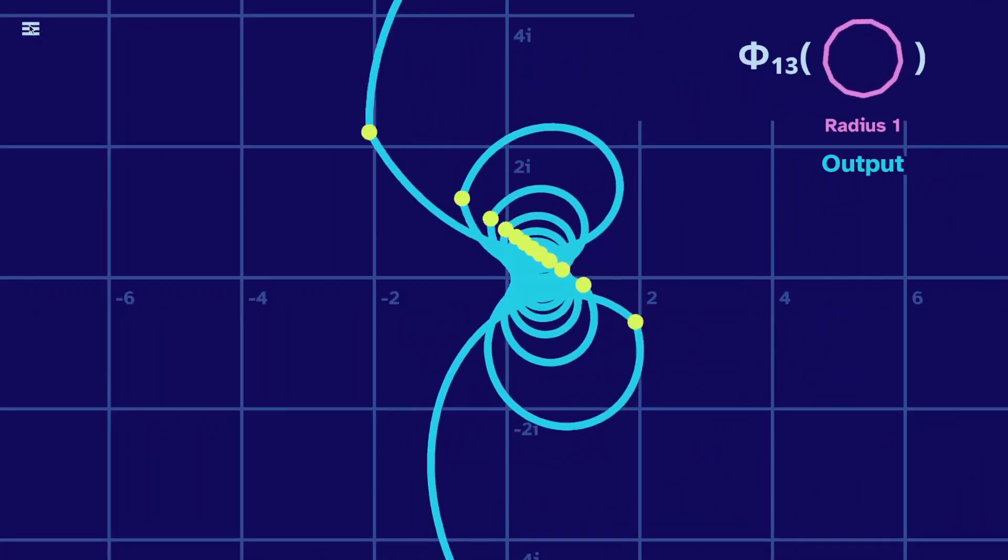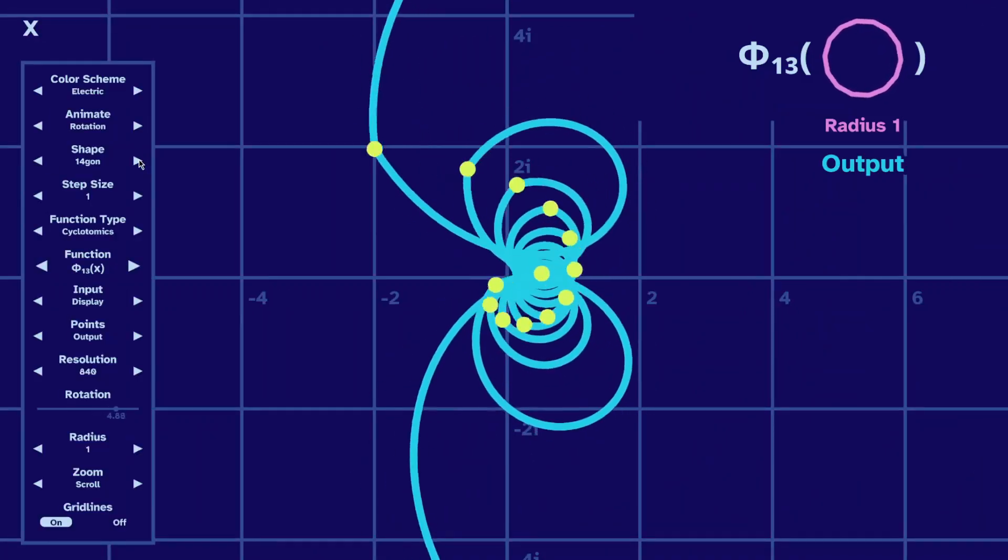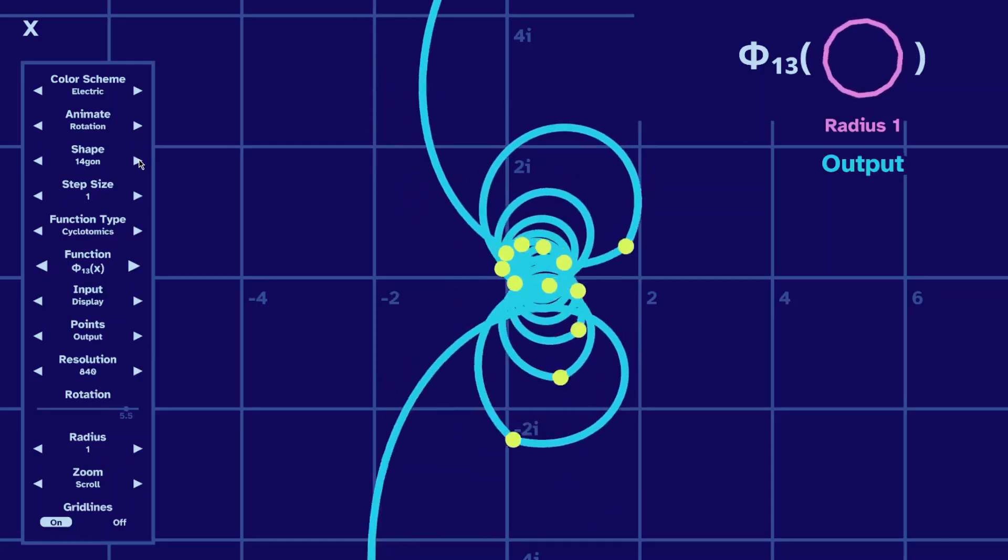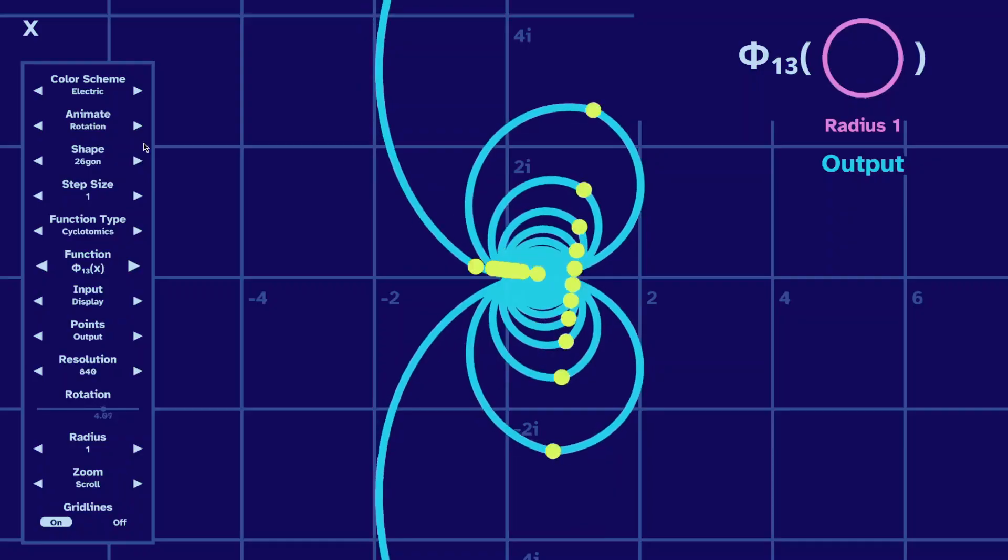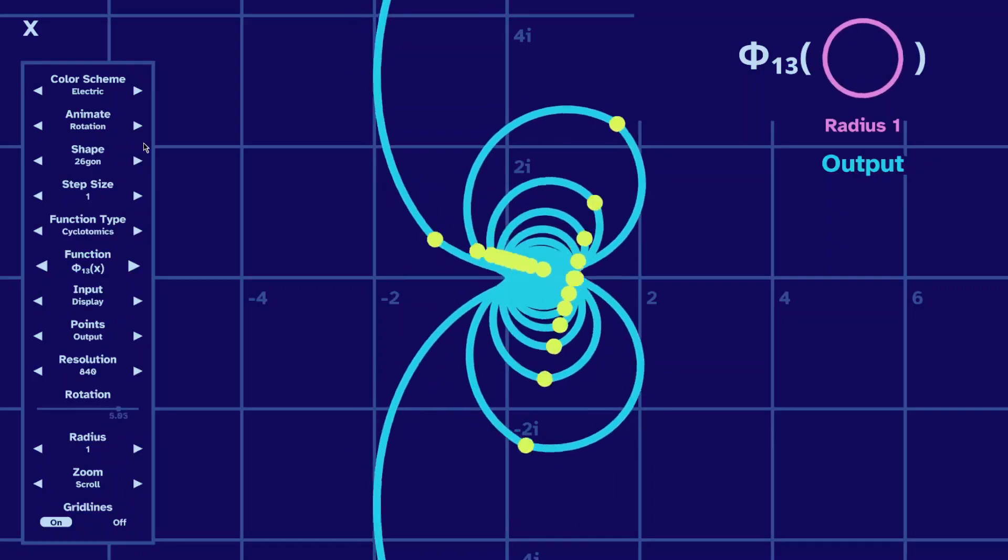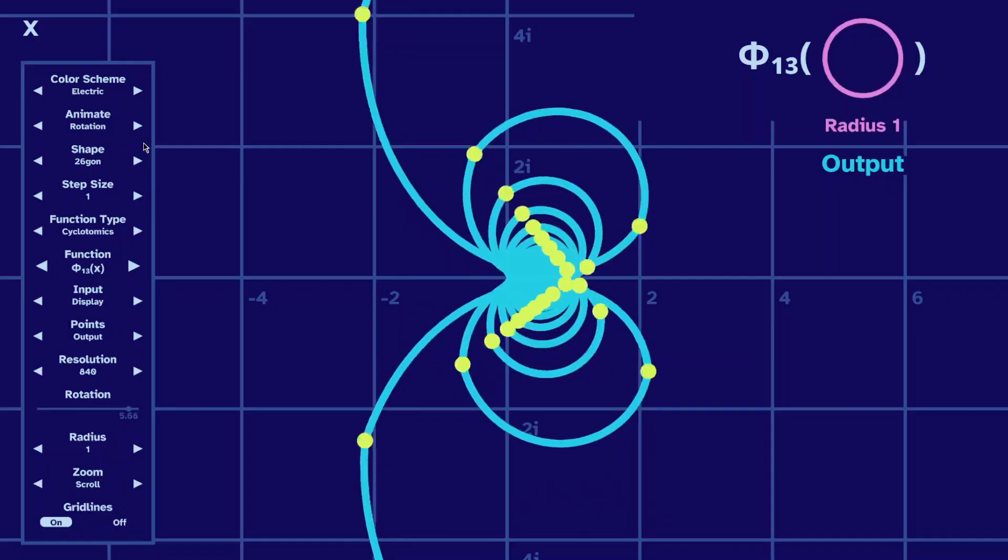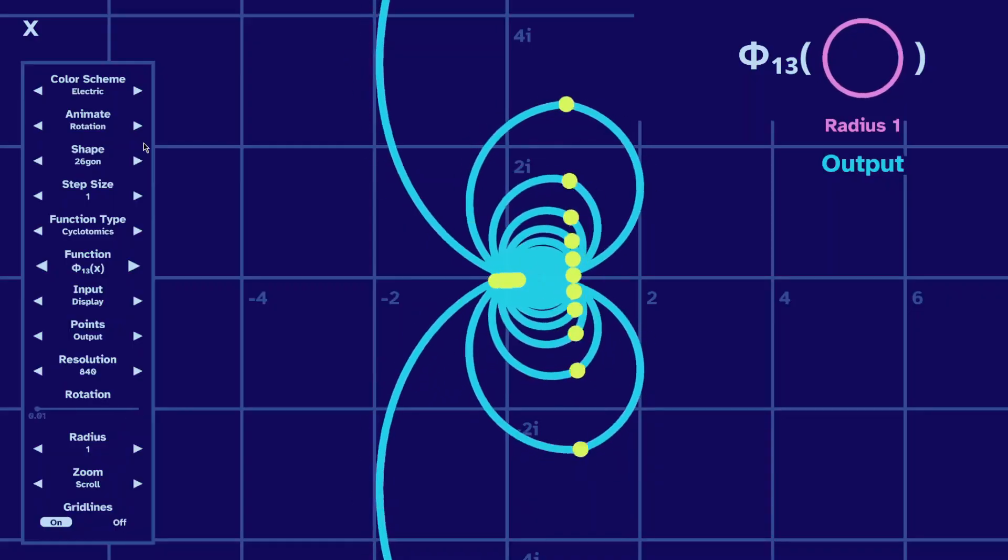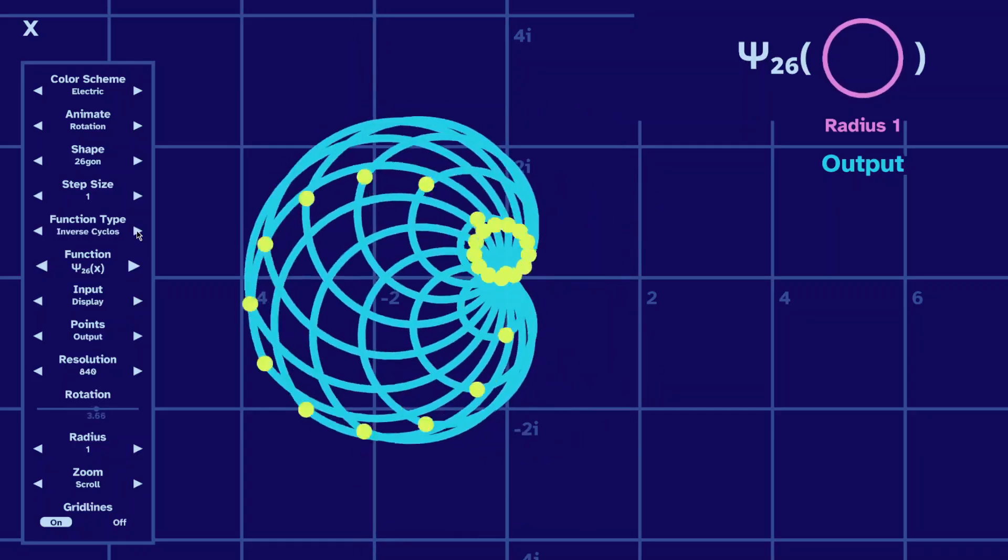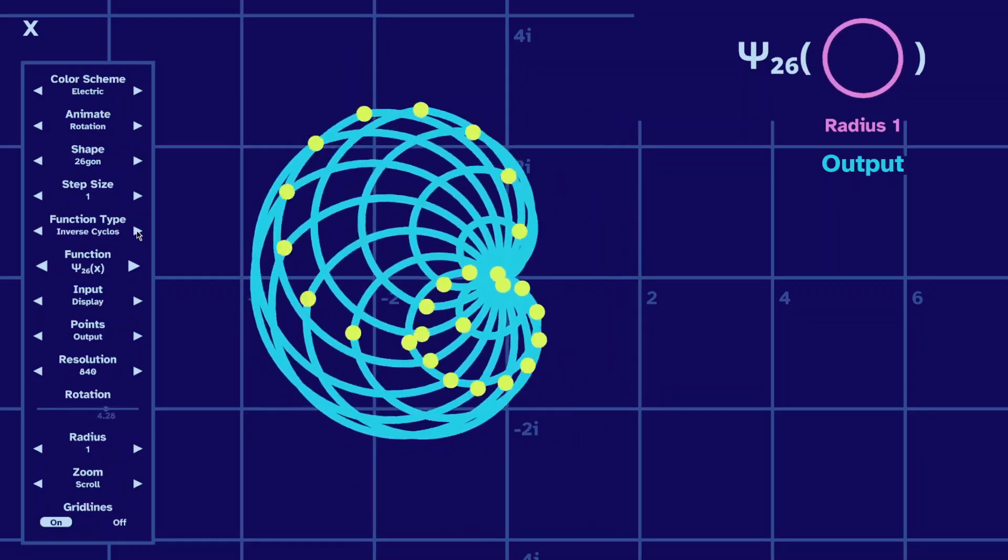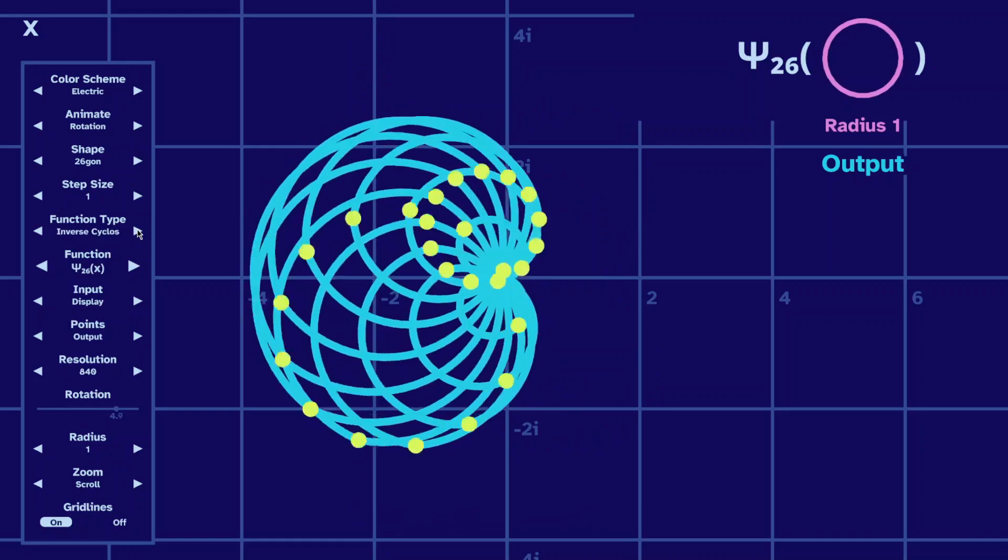And the 13th cyclotomic also looks cool with a 14-gon, or a 25-gon, or a 26-gon. Now, let's keep the 26-gon as an input and switch to the 26th cyclotomic. And then to the 26th inverse cyclotomic. This one is great.